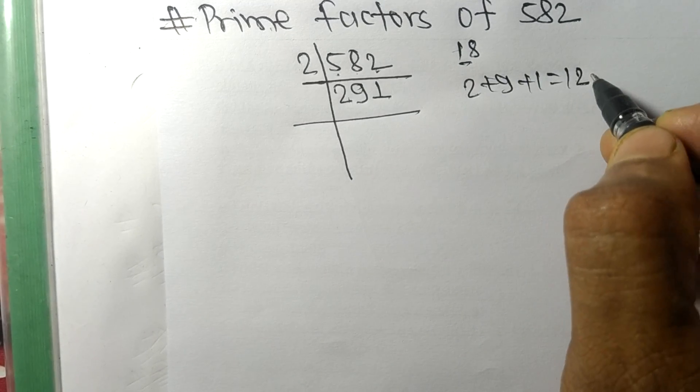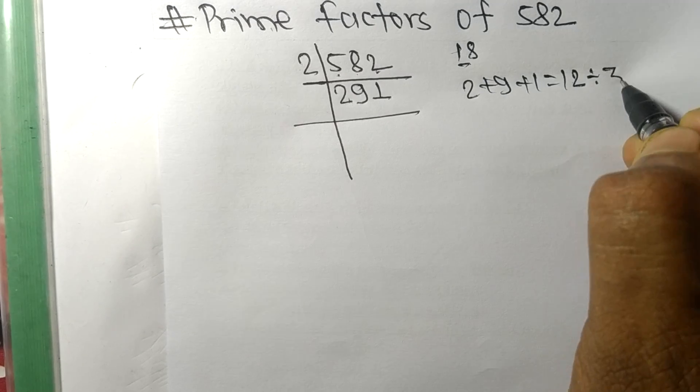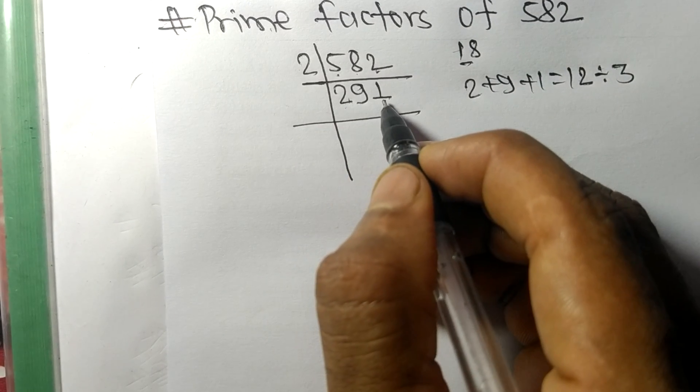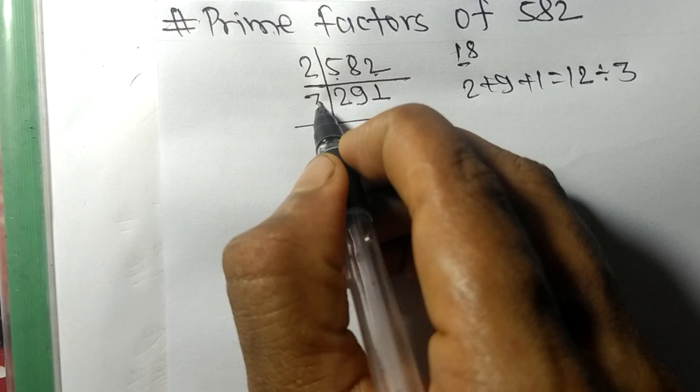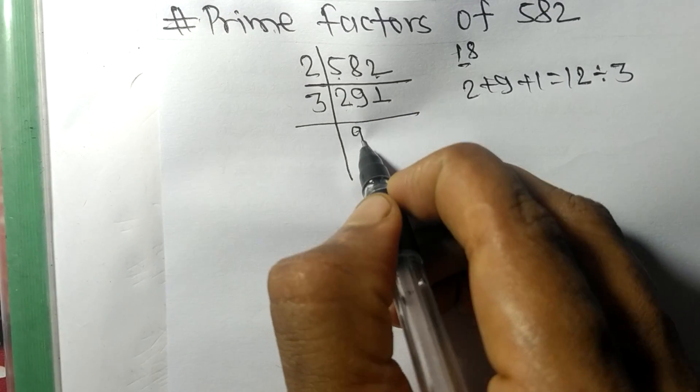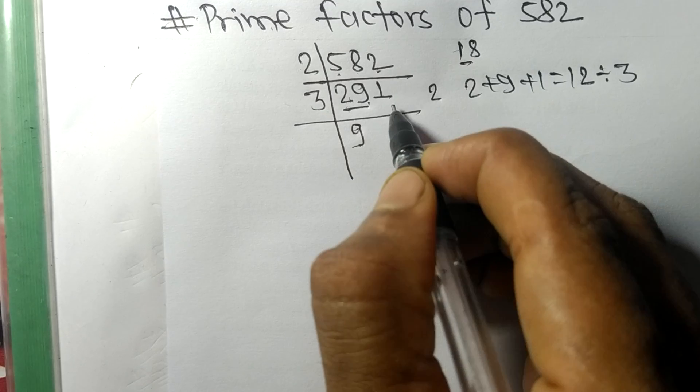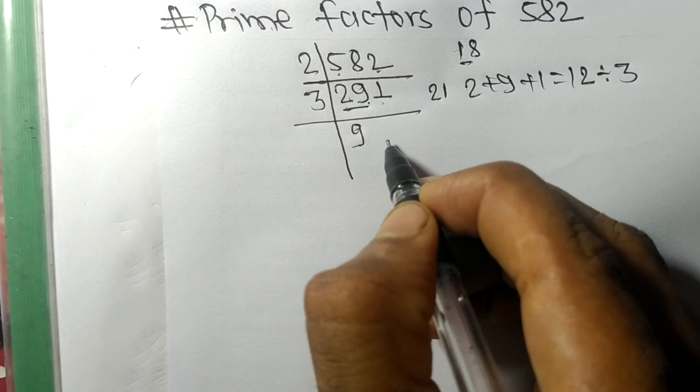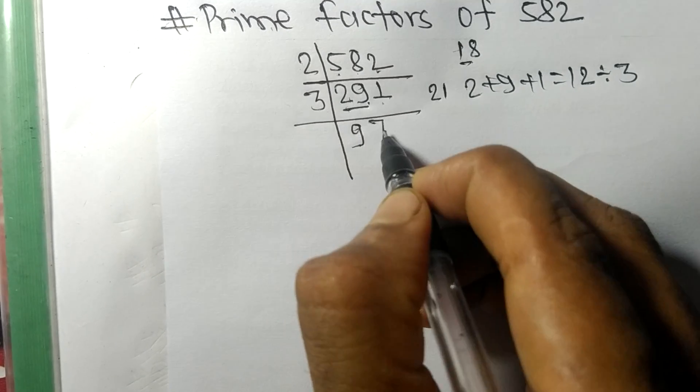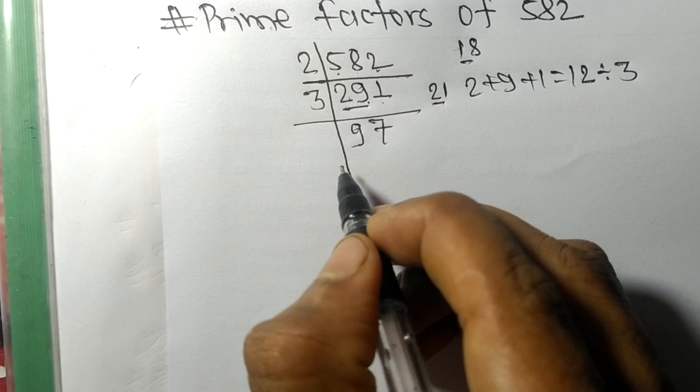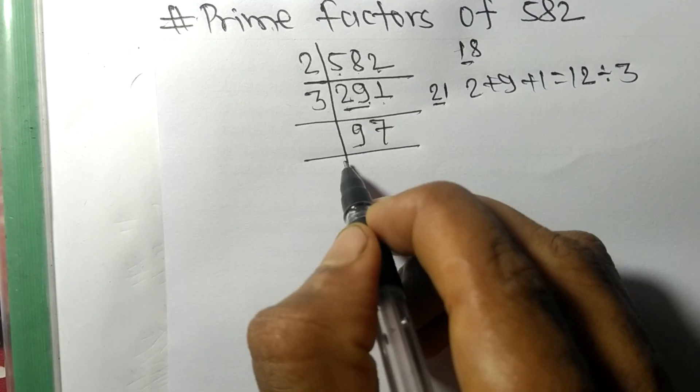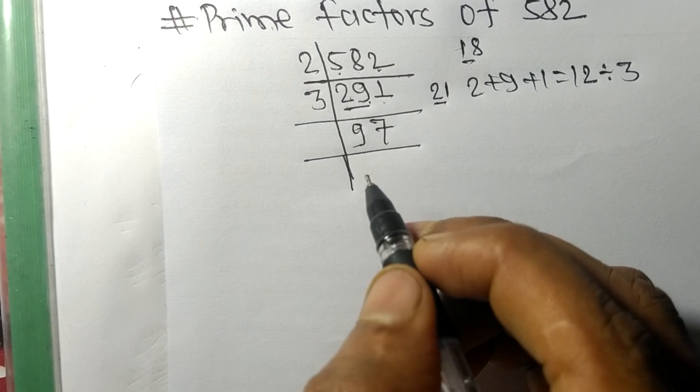And 12 is exactly divisible by 3, so 291 is also divisible by 3. 3 times 9 means 27 remainder here 2, and this one 21, 3 times 7 means 21. So now we got 97 which is a prime number.